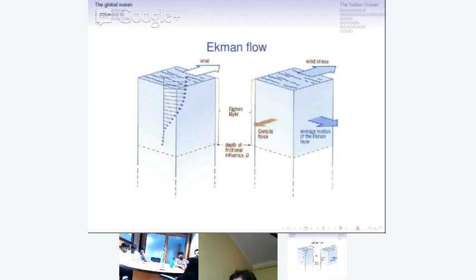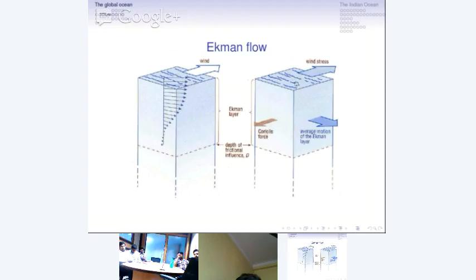So this is one major flow — Ekman flow — where the balance is between the applied wind stress and the Coriolis acceleration that results because of the motion that the wind imparts to the surface of the ocean.